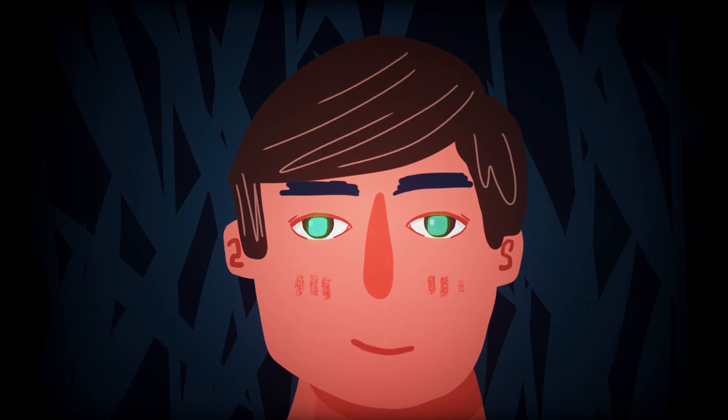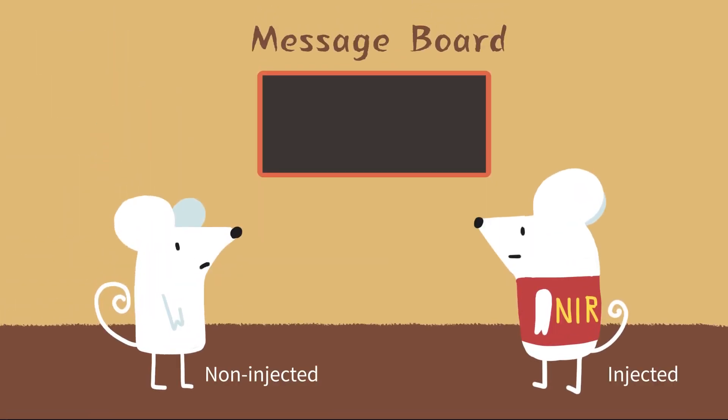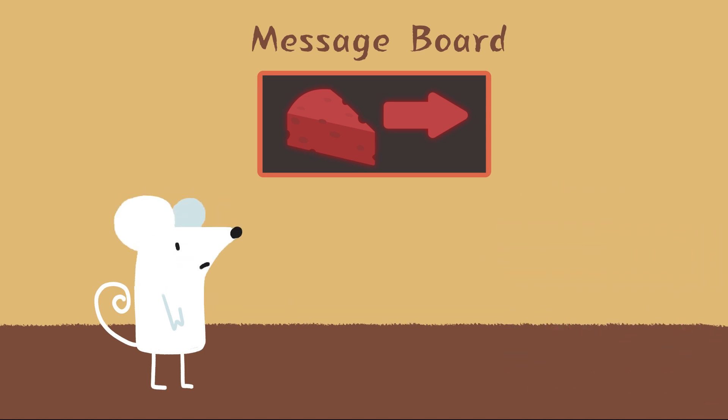This might seem like science fiction, but in a recent study published in Cell, scientists from the University of Science and Technology of China and the University of Massachusetts have made a breakthrough, making mice see near-infrared light by injecting special nanoparticles into their eyes.